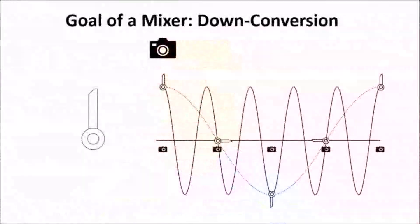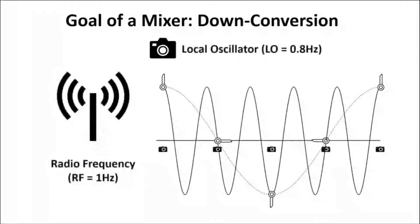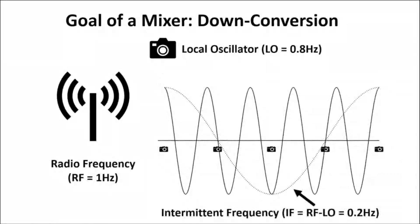To connect with our analogy, the propeller rate is equivalent to a radio frequency. And the camera is a local oscillator, which sets our sampling rate. And from sampling the radio frequency at that rate, we'll come up with an apparent intermediate frequency. That is the difference of the radio and the local oscillator, RF minus LO.